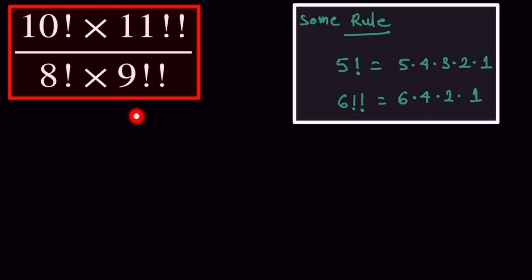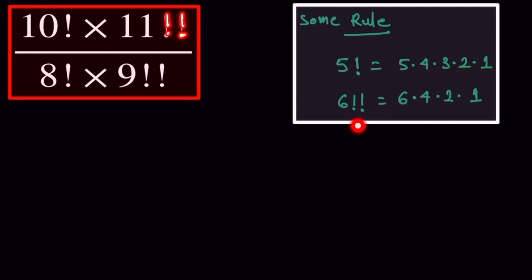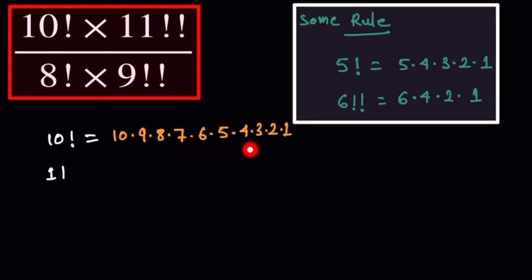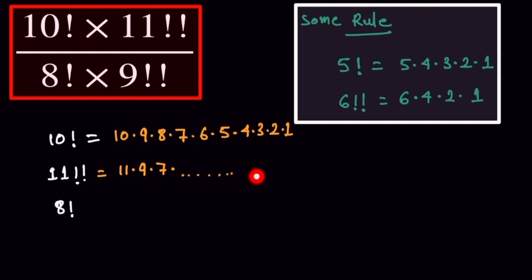So here is our question. For single factorial we differentiate by 1, and for double factorial we differentiate by 2. So 10 factorial is written as 10 into 9 into 8 into 7 into 6 into 5 into 4 into 3 into 2 into 1. And 11 double factorial is written as 11 into 9 into 7 and so on, till 1.